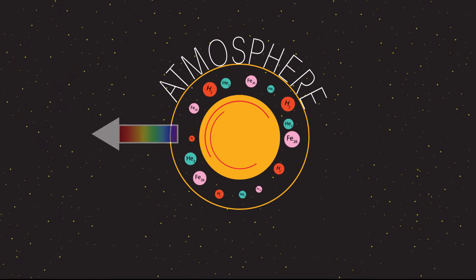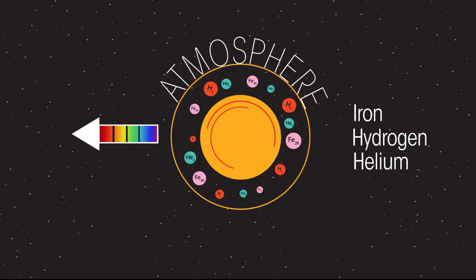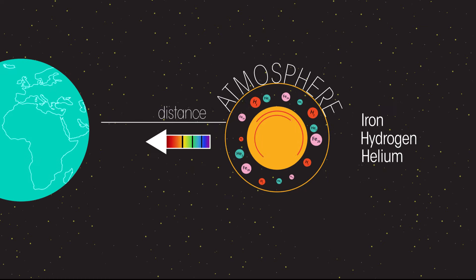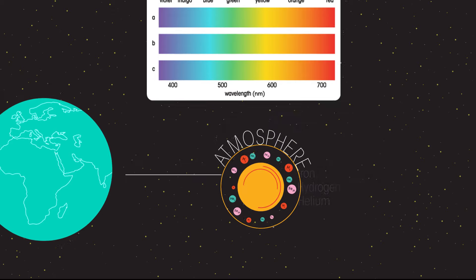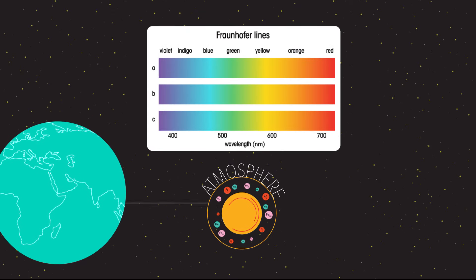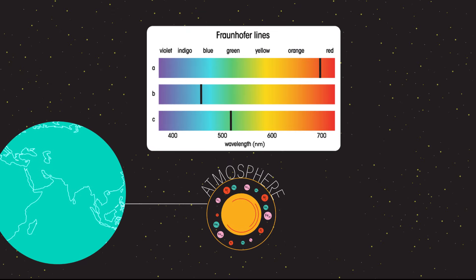The atoms of elements that are in the atmosphere of a star absorb specific wavelengths of light. This can tell us the chemical makeup of the star as well as its relative distance from the earth. We can see the absorption of these different wavelengths when looking at the light spectrum of a star, also known as Fraunhofer lines.